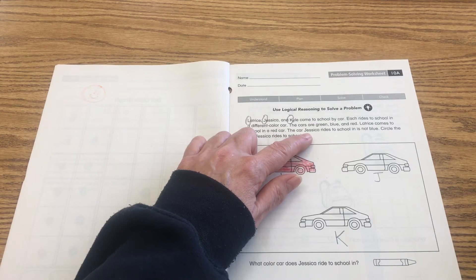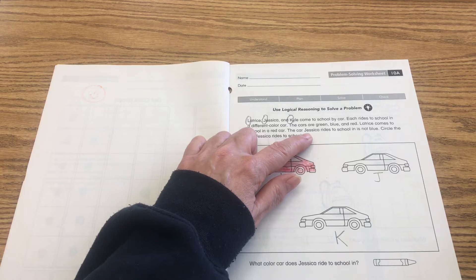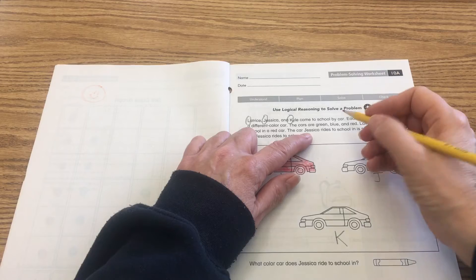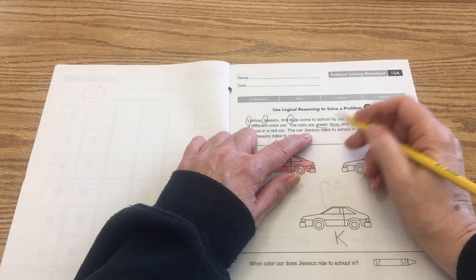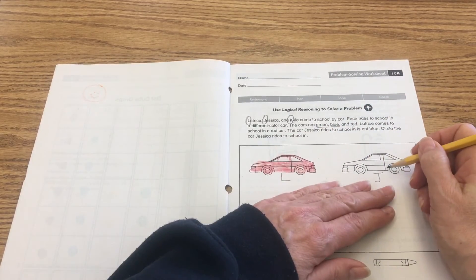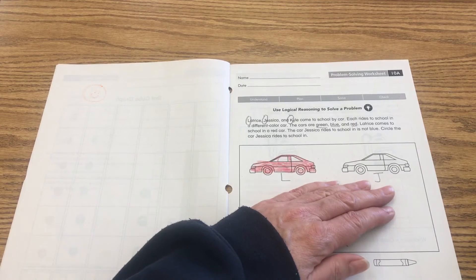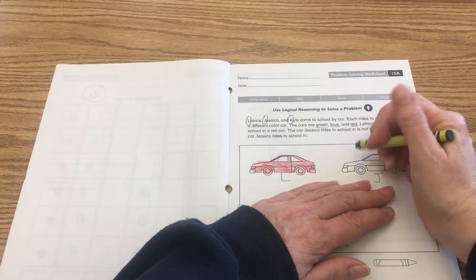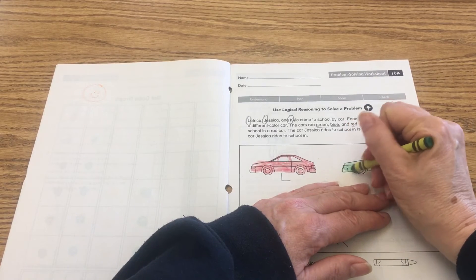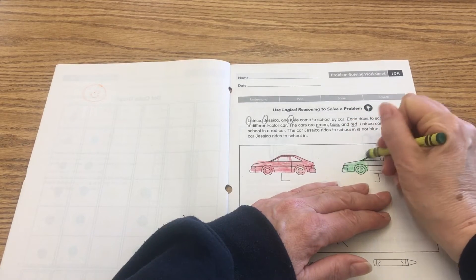It is not blue. So we had a choice of three colors: red, blue, and green. If we're looking at Jessica's car here and it is not blue, that means that the only other color left that it can be is the green car. So we're gonna color Jessica's car green.